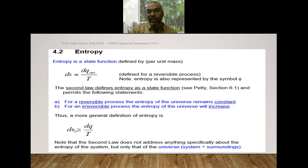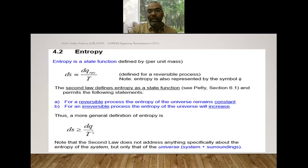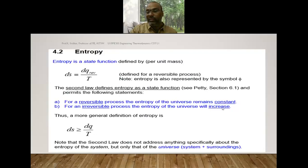The entropy principle states that dS ≥ δQ/T. For an irreversible process, dS > δQ/T; for a reversible process, dS = δQ/T; if dS < δQ/T, it is impossible and violates the second law. For a reversible adiabatic process, δQ = 0, so dS = 0, meaning S1 = S2 — entropy remains constant. For a reversible process, entropy of the universe remains constant; for an irreversible process, it always increases.